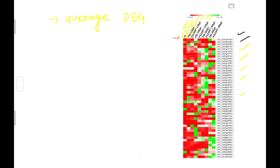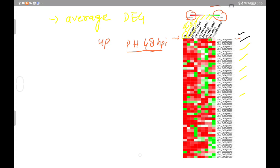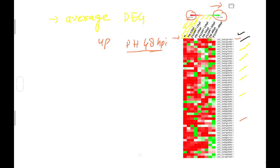If we talk about this specific gene, red means it is showing lower expression and as the color becomes green it shows maximum expression. Among all treatments, the pH 48 hours post-infection treatment shows this gene was upregulating. You can choose your own color scheme because there are software tools available that can change the colors and generate your own heat map.